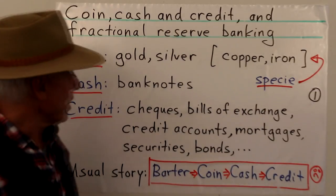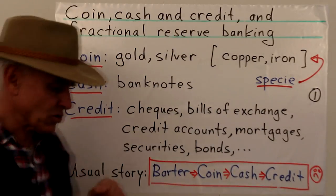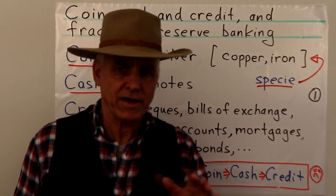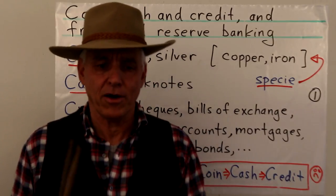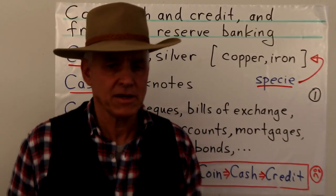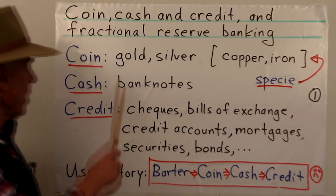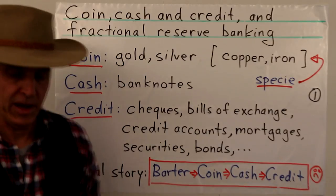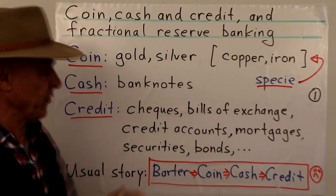So in the story of money, there are three broad categories that are convenient: coin, cash, and credit — because they all start with C.